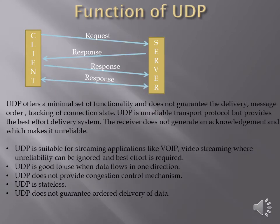Function of UDP: UDP offers a minimal set of functionality and does not guarantee delivery, message order, or tracking of connection state. UDP is an unreliable transport protocol but provides a best-effort delivery system. The receiver does not generate an acknowledgement, which makes it unreliable. In the figure, you can see the client sends a request but the server does not send an acknowledgement back to the client.